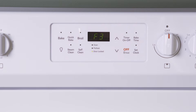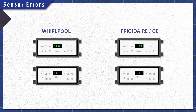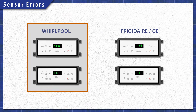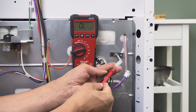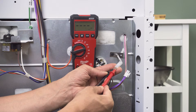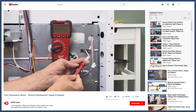A temperature sensor code is displayed when there's a faulty or shorted temperature sensor. Whirlpool models will likely display an F3E0 or an F3E1 code. Frigidaire and GE models will display an F3 or an F4 code. We can test the resistance to verify if the sensor is defective. You can see how to troubleshoot this in the video linked below.